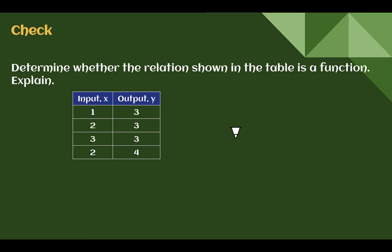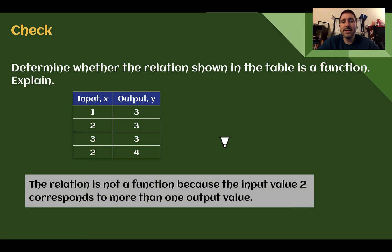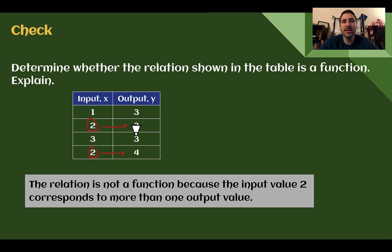Check your understanding: determine if the relation shown is a function — explain. This is not a function because we have a 2 here and a 2 here, but this 2 goes to 3 and this 2 went to 4. The same input, even though it showed up in a different spot, went to two different outputs. So this is not a function.